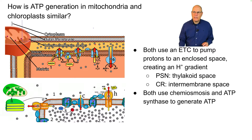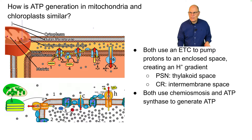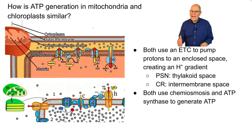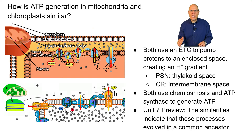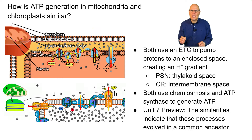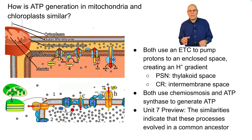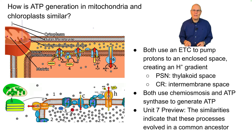Both use a subsequent process of chemiosmosis — diffusion of protons through an ATP synthase channel — to generate ATP. And that's not a coincidence. As we'll see in unit seven, where we'll talk about evolution, the similarities between mitochondria and chloroplasts indicate that at some point in very ancient history they had a common ancestor. ATP synthase evolved once, and then it became shared by the ancestors of chloroplasts and mitochondria. It's an incredible ride seeing biology and evolution in process.